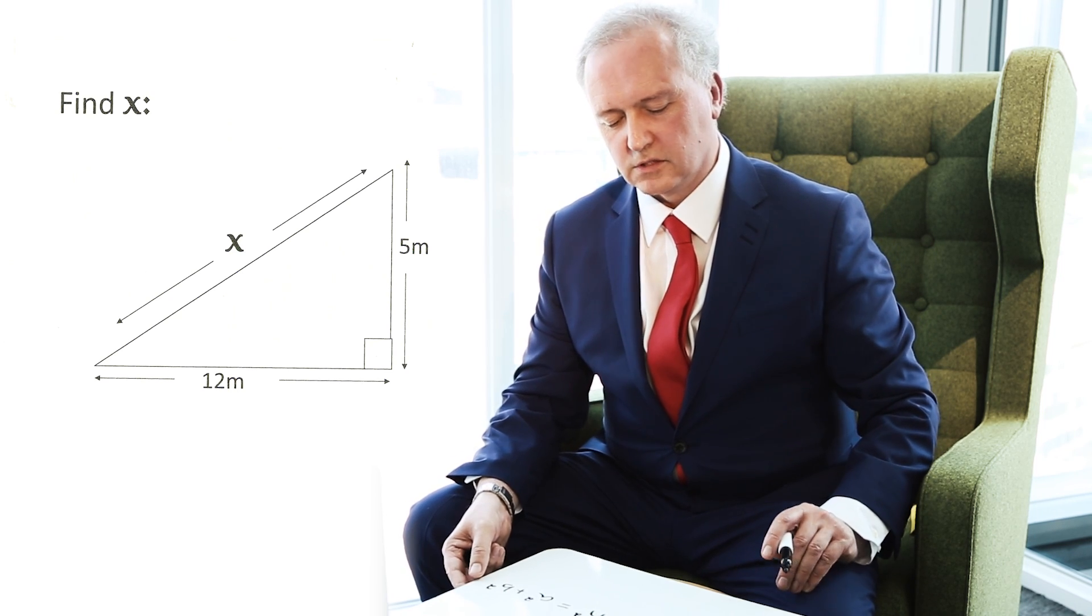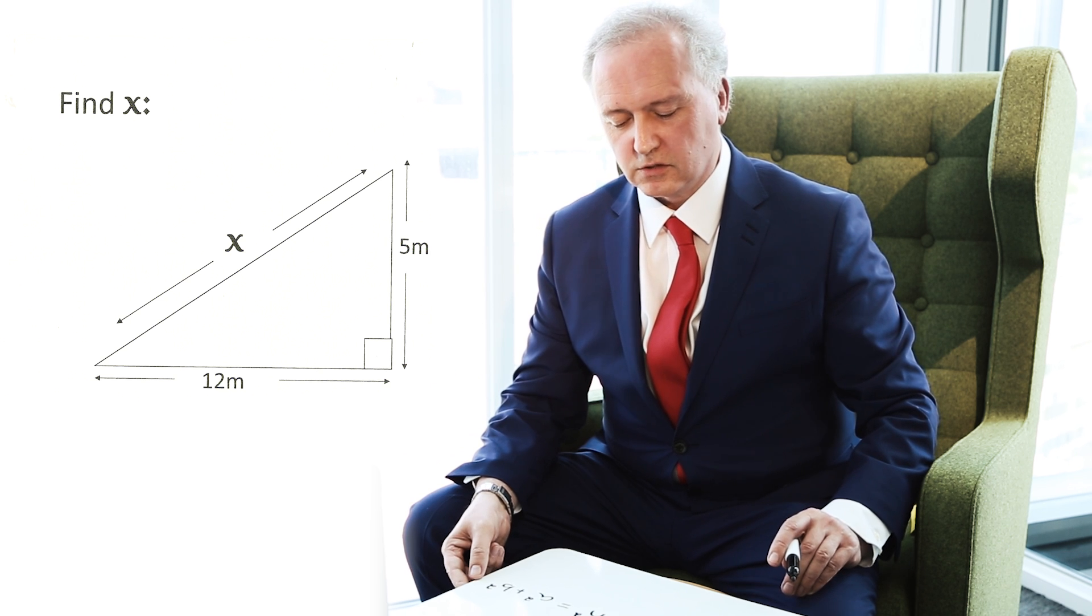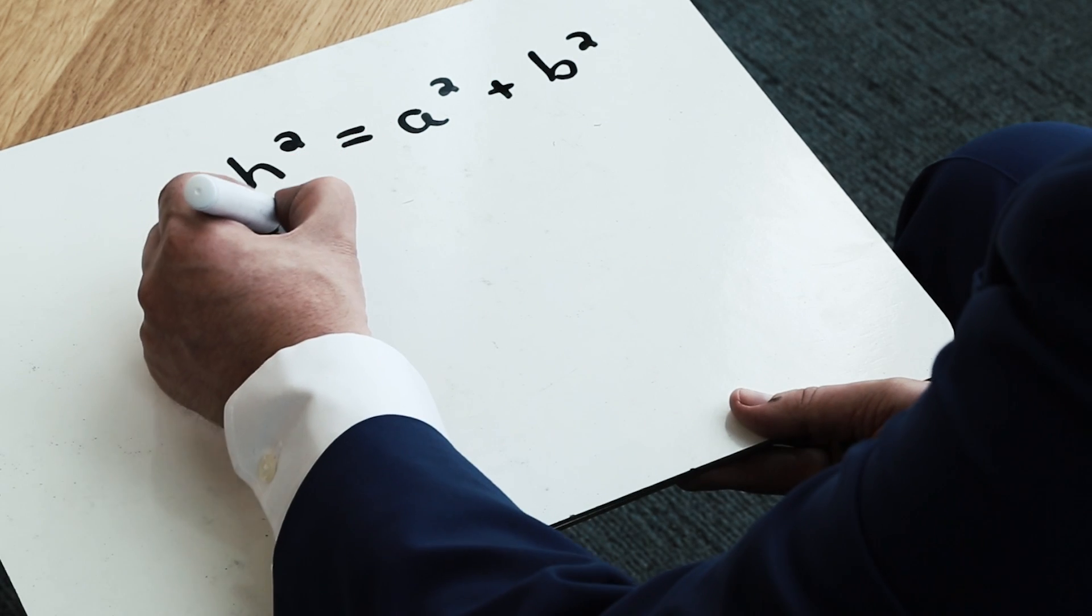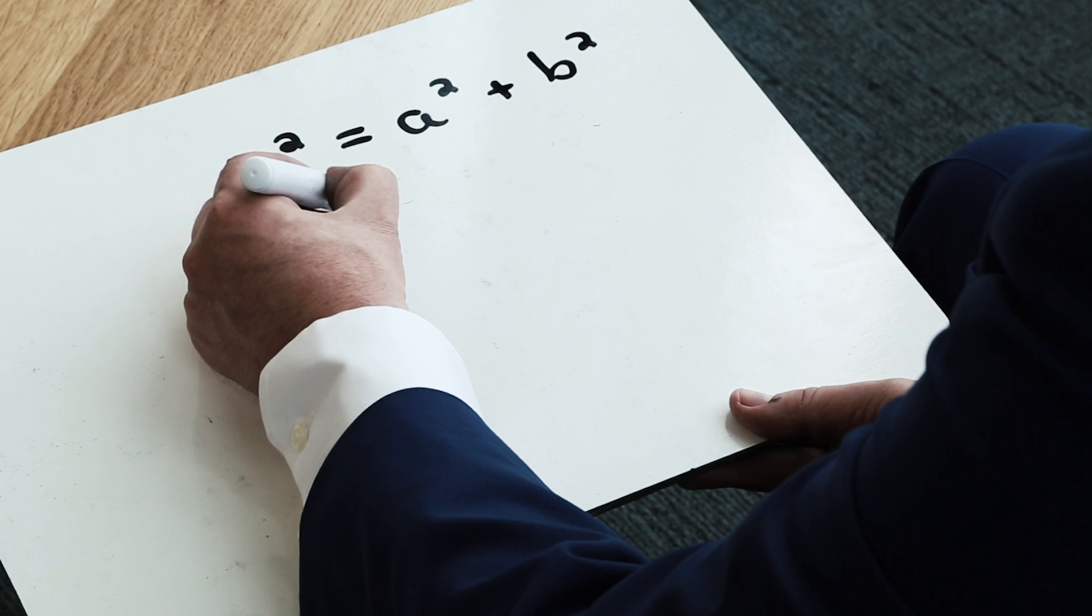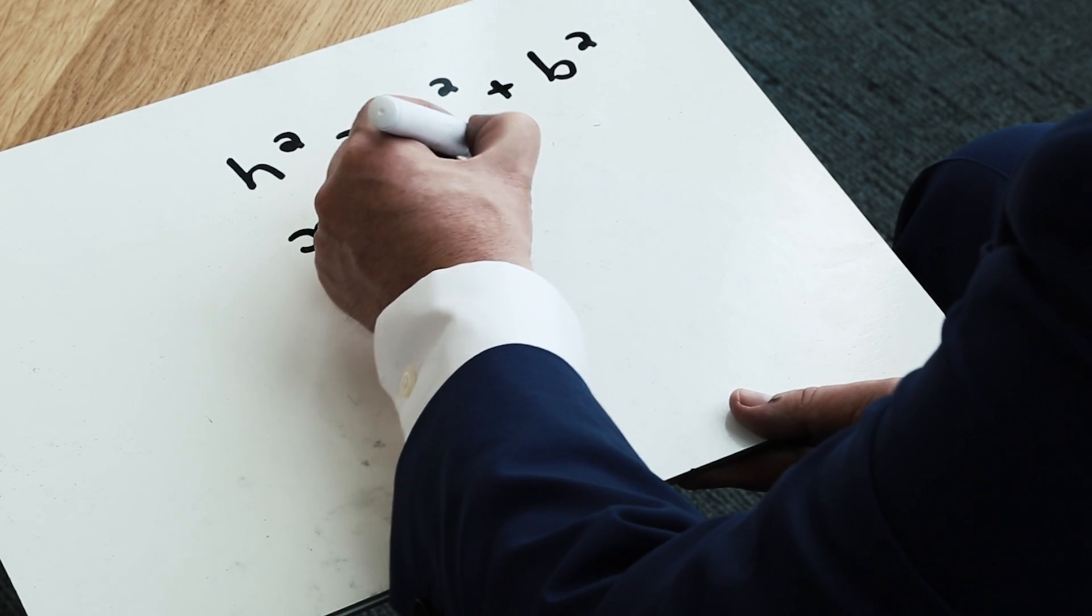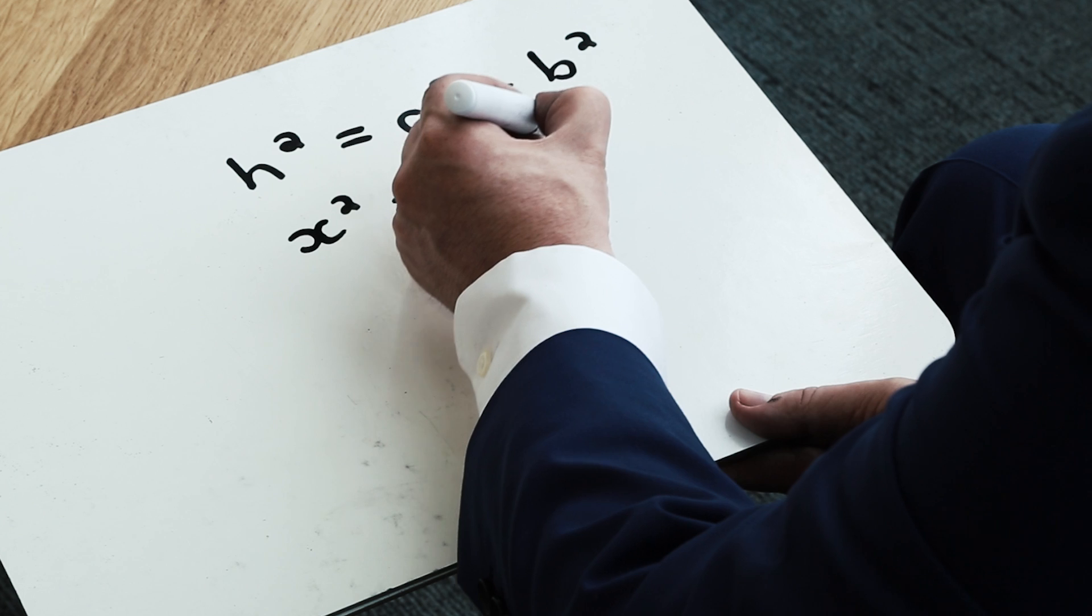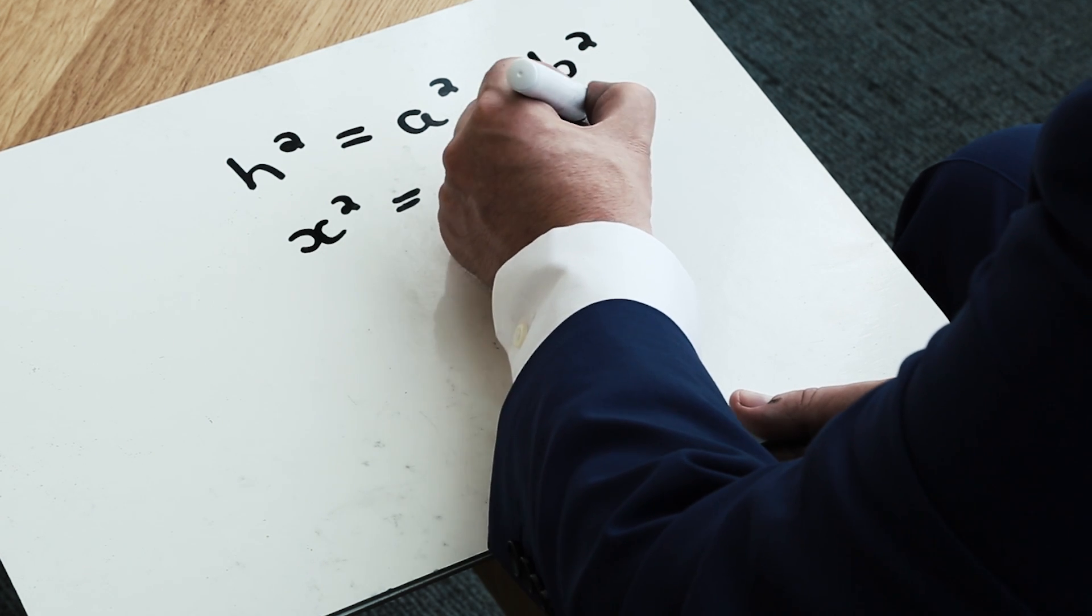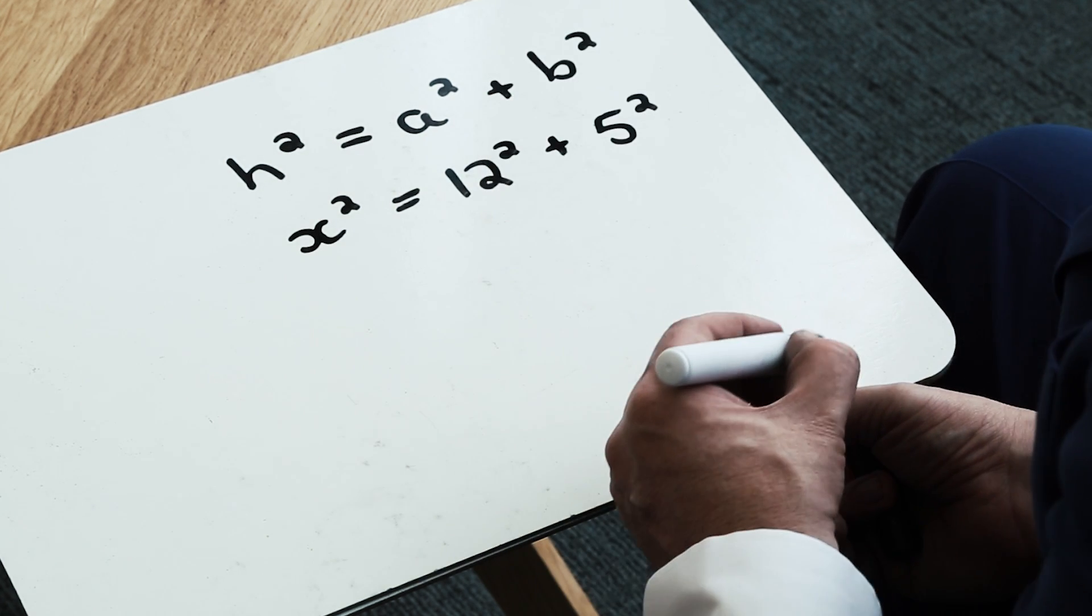What we're going to do to solve this Pythagoras' question is we're going to actually substitute our values into our formula. So my first line would be that h squared is equal to 12 squared plus 5 squared. That picks up my first method mark in the exam.